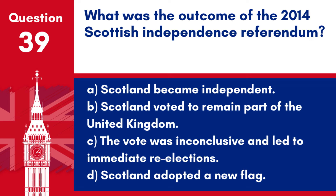Question 39. What was the outcome of the 2014 Scottish independence referendum? a. Scotland became independent. b. Scotland voted to remain part of the United Kingdom. c. The vote was inconclusive and led to immediate re-elections. d. Scotland adopted a new flag.